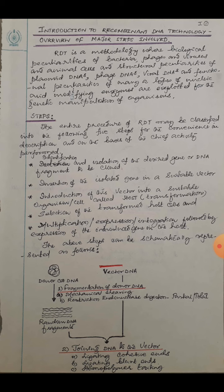The entire procedure of RDT may be classified into the following five steps for our convenience in description and on the basis of the chief activity performed. Number one: isolation and identification of the desired gene or DNA fragment to be cloned. You have to isolate the genome and identify and isolate a particular gene which needs to be cloned. Recombinant DNA technology was earlier called gene cloning. You will isolate the genome, identify a particular gene of your choice, and isolate it. This is the first step, so that your gene to be cloned is ready.